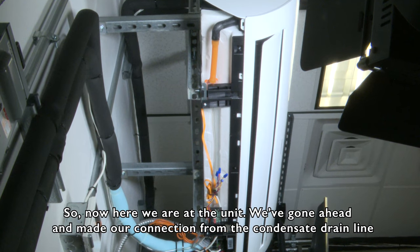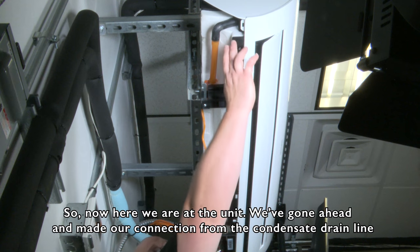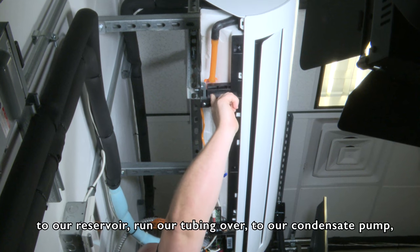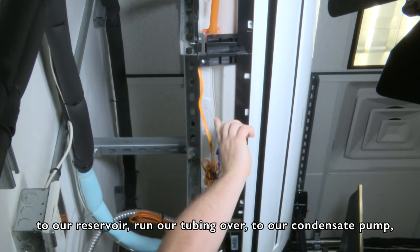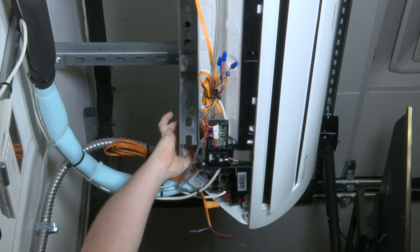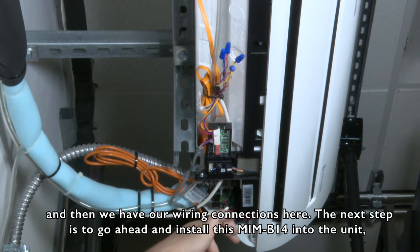Now here we are at the unit. We've gone ahead and made our connection from the condensate drain line to our reservoir, run our tubing over to our condensate pump, and then we have our wiring connections here.